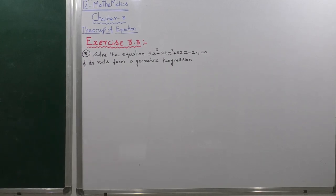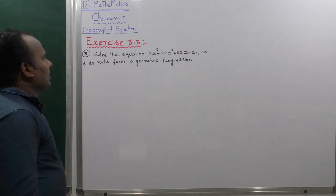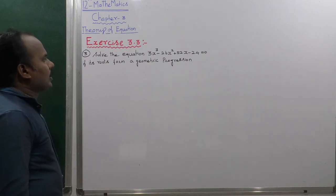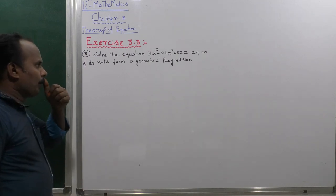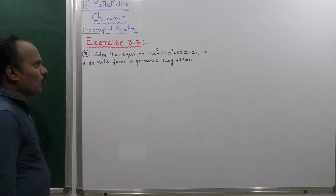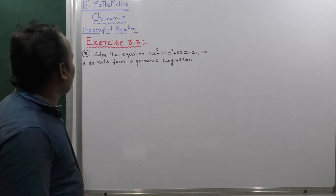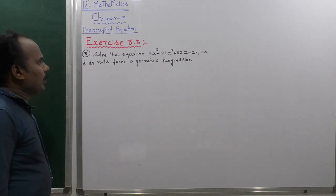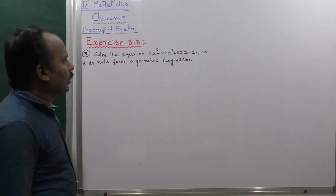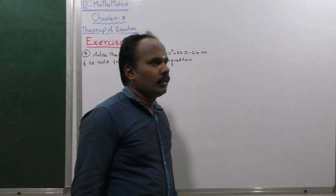X is 3.3, sum number 3. The equation is 3x cubed minus 26x squared plus 52x minus 24 equals 0. The roots form a geometric progression, that is called GP.